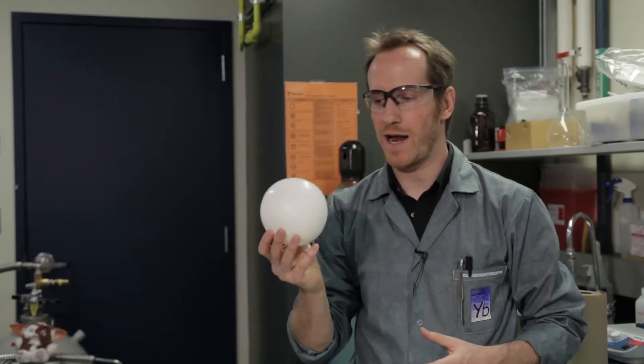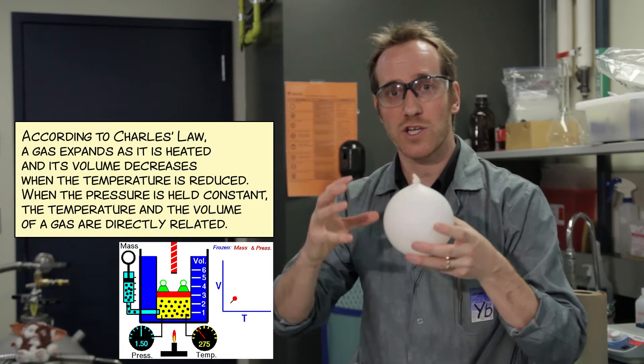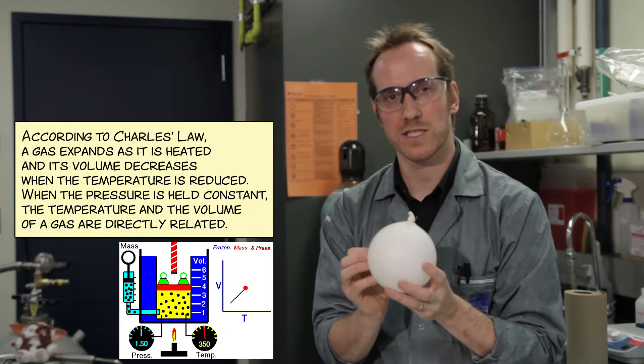To reproduce this effect in the lab, we're going to be using balloons filled with air. We're going to dip them in liquid nitrogen. Liquid nitrogen is at minus 200 degrees Celsius, about minus 320 Fahrenheit. That's very cold. So the air inside is going to reduce its volume because of temperature.